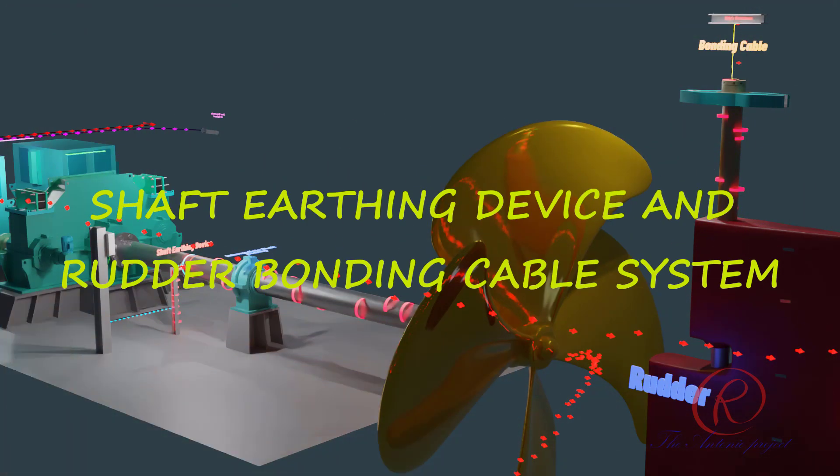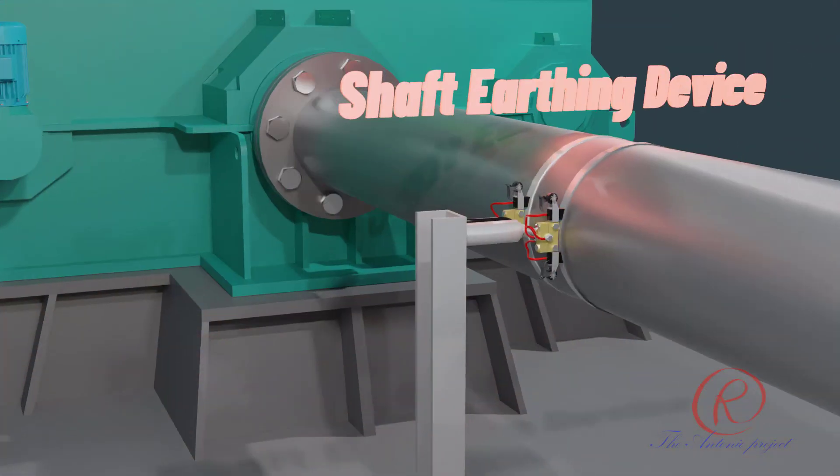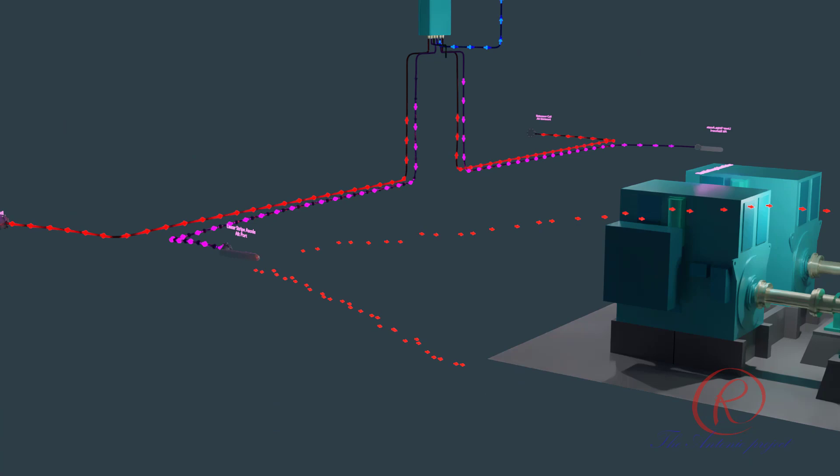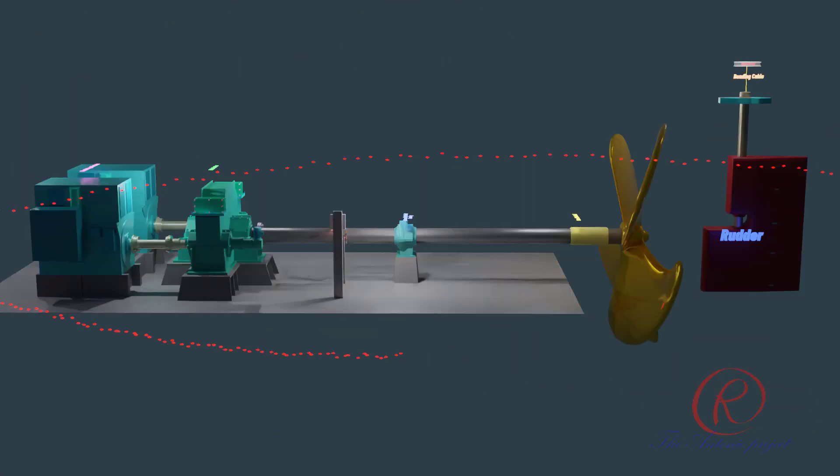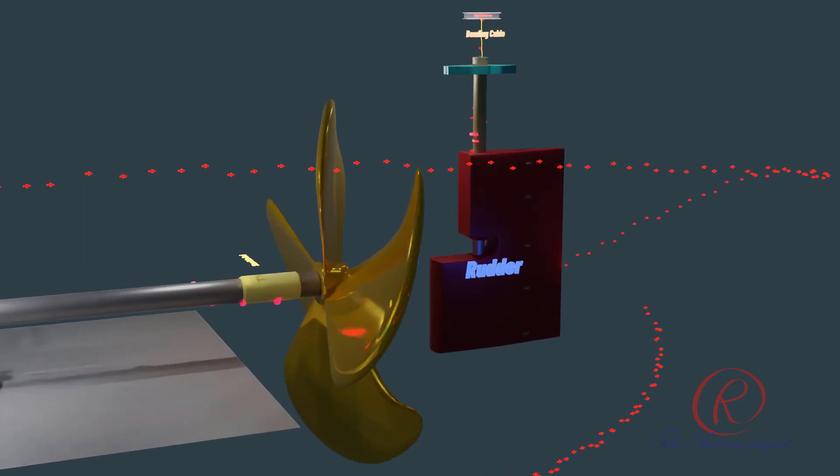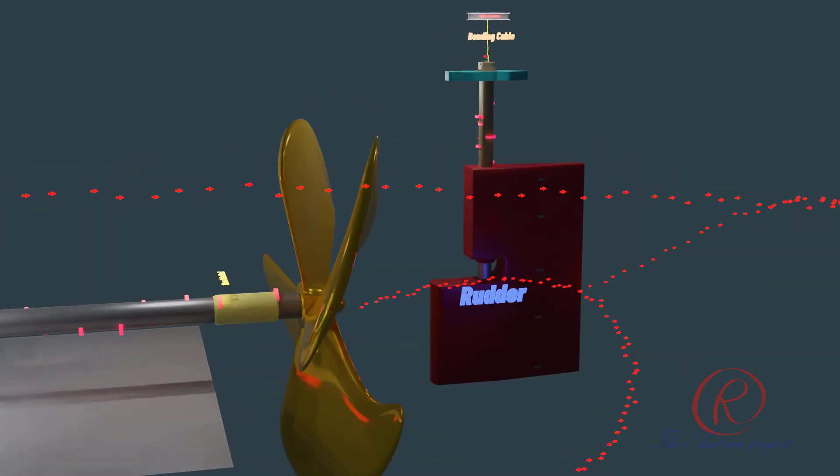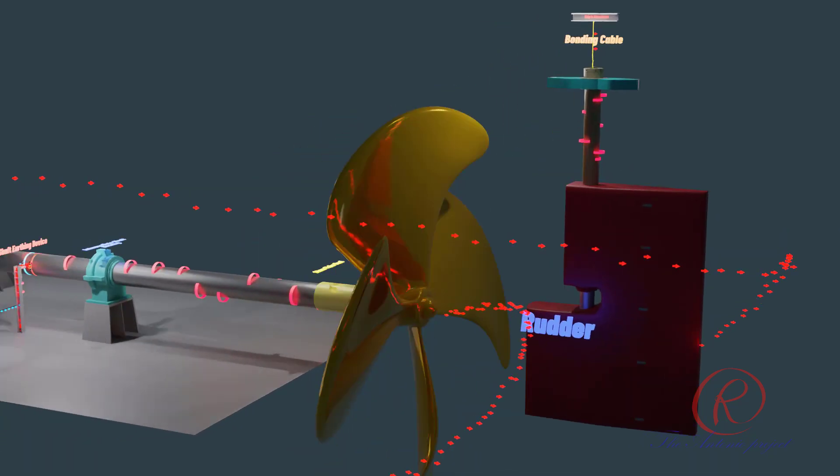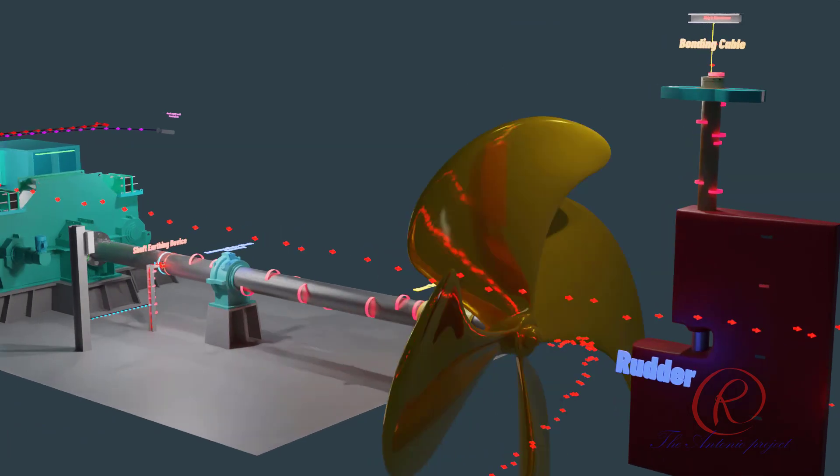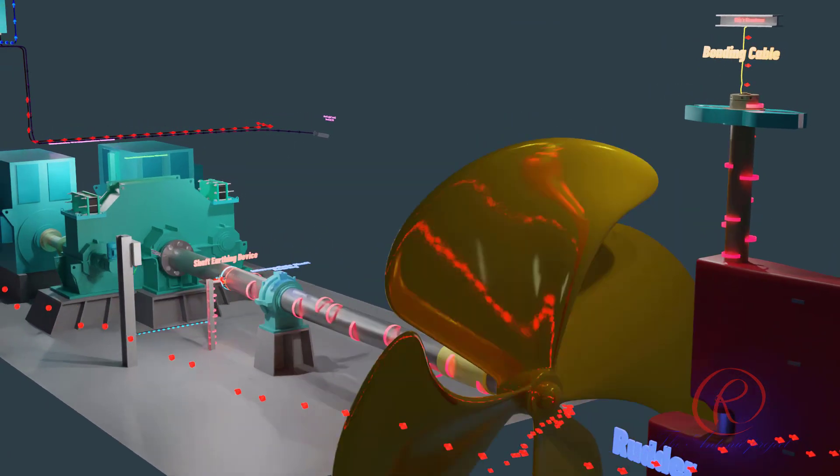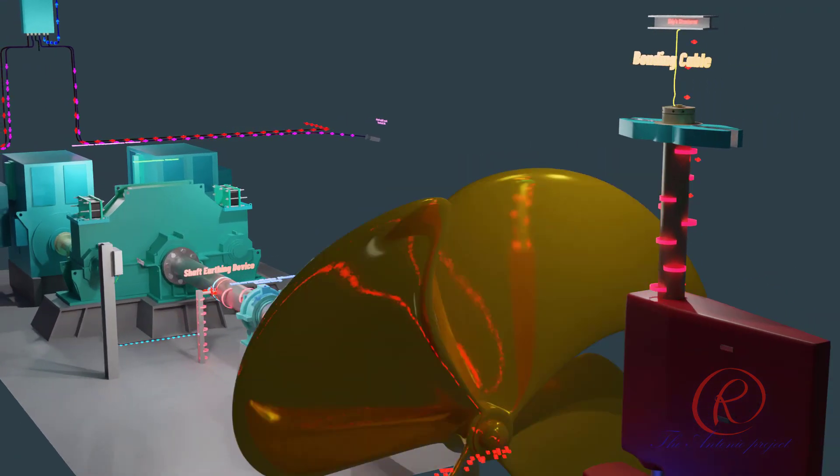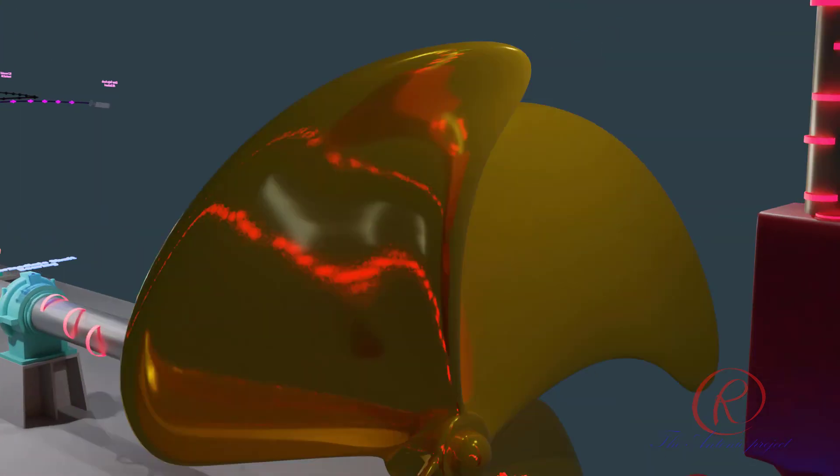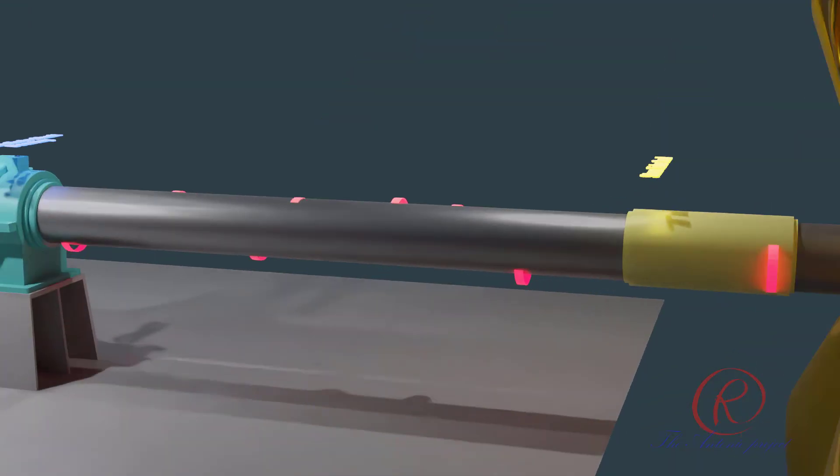Shaft earthing device and rudder bonding cable system. The following is the animation video showing how shaft earthing device and rudder bonding cable system is working. Shaft earthing device, silver graphite brush and slip rings is under good condition, and rudder bonding cable connecting to hull body properly. Electric current from ICCP anode flowing to propeller and rudder, the current then passing rudder, rudder stock and bonding cable to get to hull body for earthing. Rudder bonding will equalize the potential difference between the rudder and the stern hull, and hence reduce the risk of detrimental stray current. The lack of electrical connection between the rudder and the stern hull may result in detrimental stray current, causing spark corrosion.